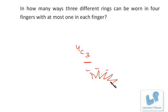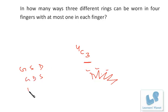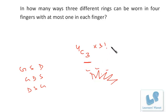After selecting three fingers — maybe these three, maybe those three, whatever combination — because the rings are different we can also have different arrangements. Suppose the rings are gold, silver, and diamond: we can wear gold-silver-diamond, or gold-diamond-silver, or diamond-silver-gold, and so on. The three rings can be arranged in those three fingers in 3! ways. So it's selection and then arrangement — this is what permutation is.